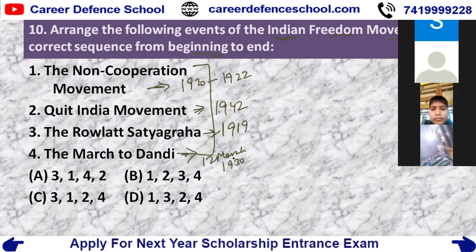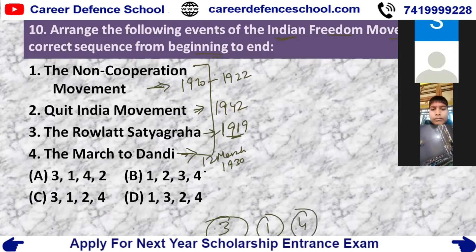So as per this chronological order, Option A is correct — Rowlatt Satyagraha (1919), Non-Cooperation Movement (1920–22), March to Dandi (1930), Quit India Movement (1942).